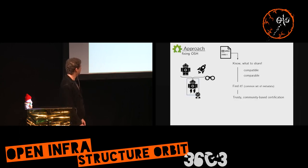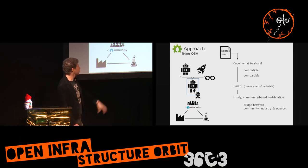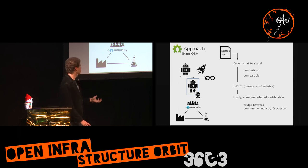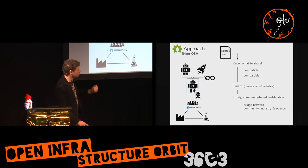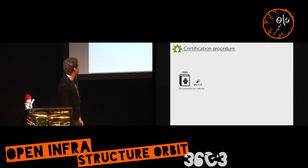The standard defines a common set of metadata so others can actually find your hardware. As it's an official standard, we can put a trustworthy, community-based certificate on that. This is meant to build a bridge between community, industry, and research institutes — because apparently industry and science need papers and certificates. By that process it doesn't really matter who comes up with the invention first and who uses it in the end, so all can effectively work together.